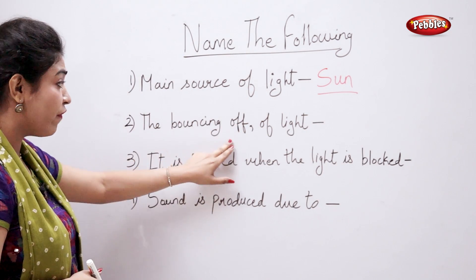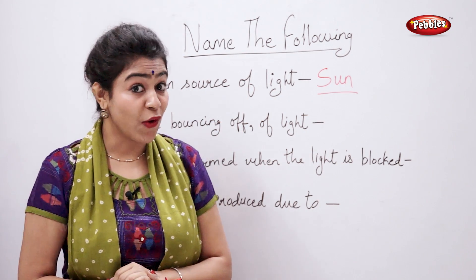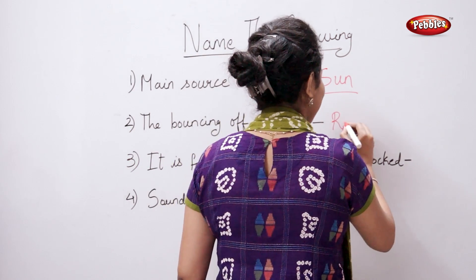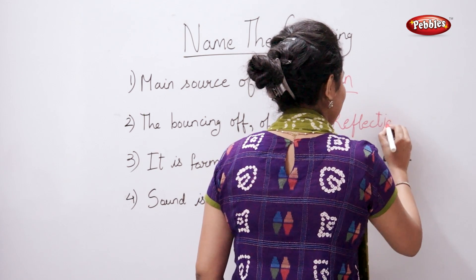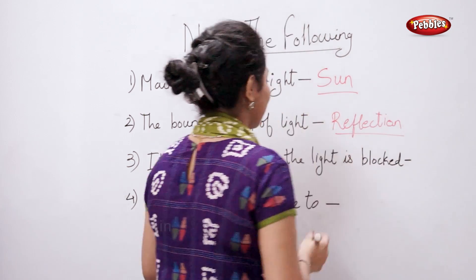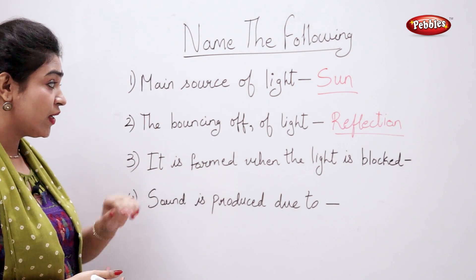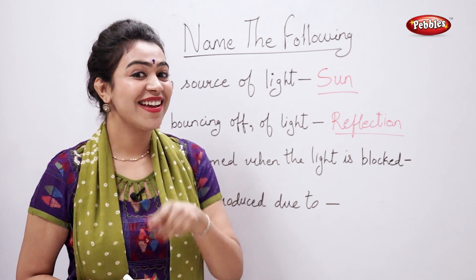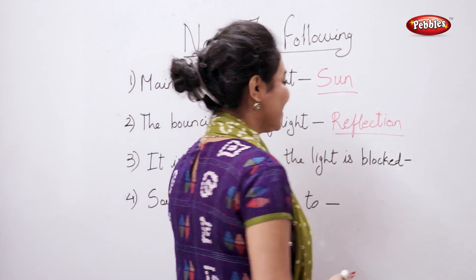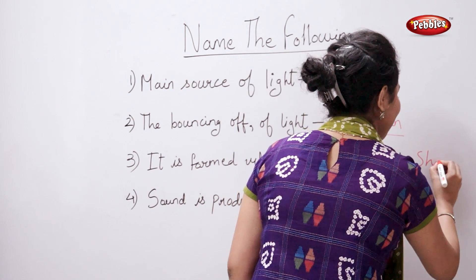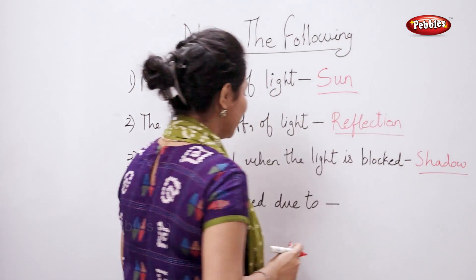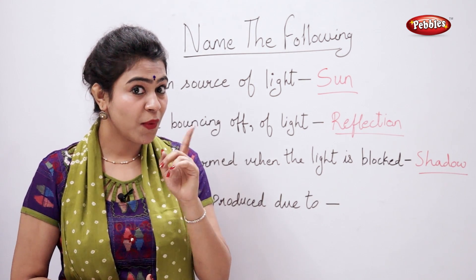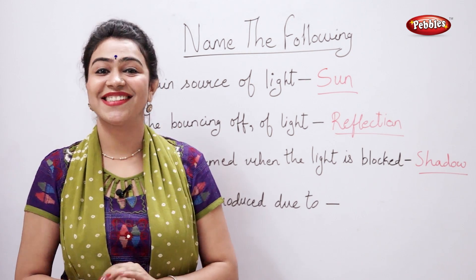The bouncing off of light is called reflection. It is formed when the light is blocked — what's that? Shadow. Sound is produced due to vibrations.